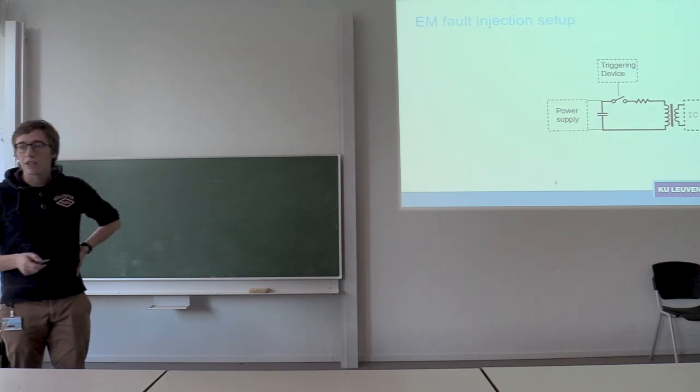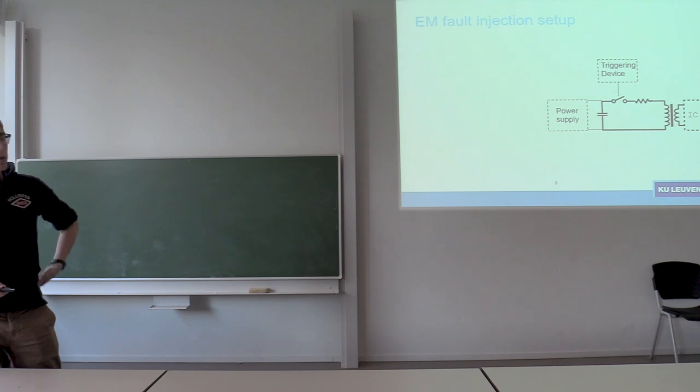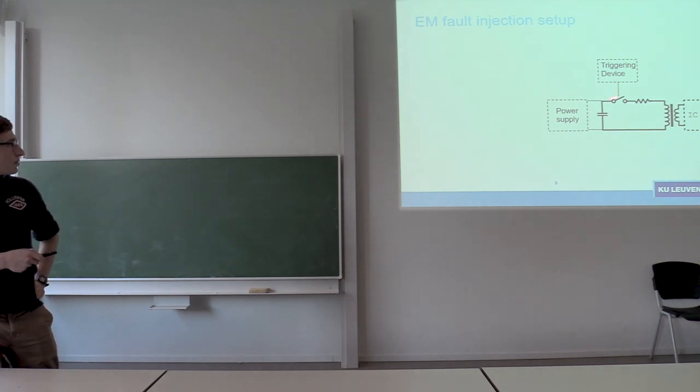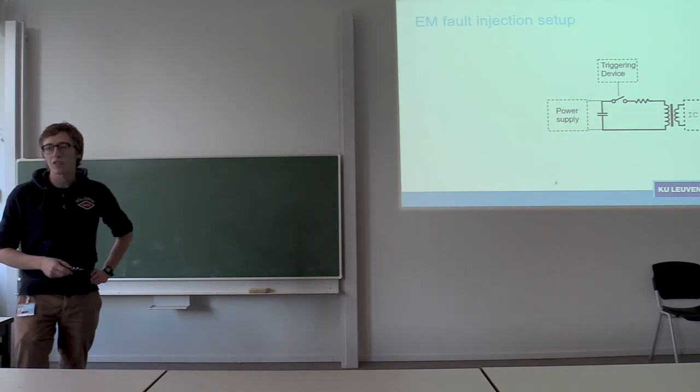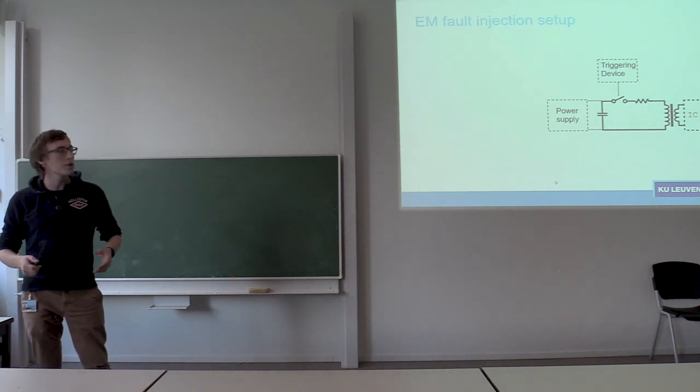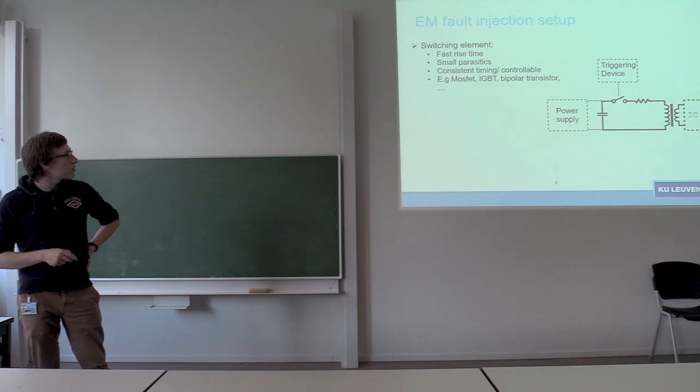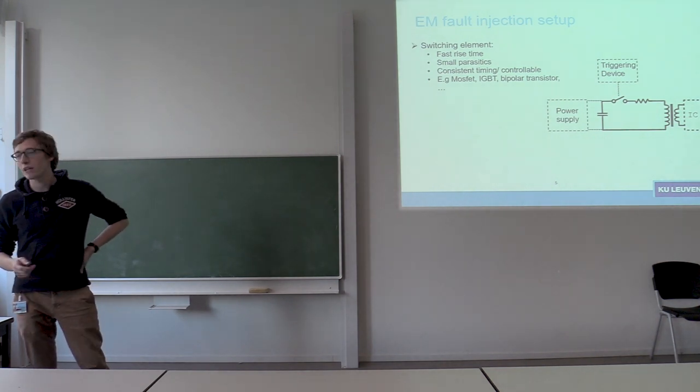But if you want to build an actual setup, there are a little bit more components involved. So you have your simple RLC loop, then you have to add a triggering device to time your injection, and then of course you need a power supply. And for most of these components it's relatively straightforward which properties that you desire of them.